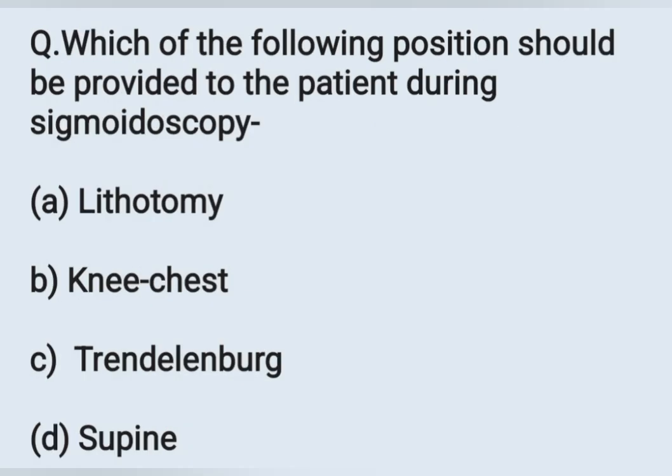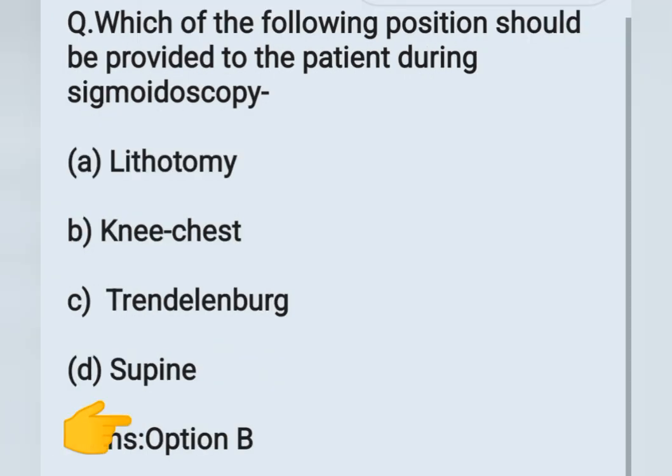The next question: which of the following positions should be provided to the patient during sigmoidoscopy? Options: A - lithotomy, B - knee chest, C - Trendelenburg, D - supine position. Sigmoidoscopy is a diagnostic procedure used to visualize the colon and rectum. The position used for sigmoidoscopy is the knee chest position. Option B is the correct answer. This knee chest position, or genu pectoral position, is also used for examination of the vagina and as an exercise for postpartum patients.